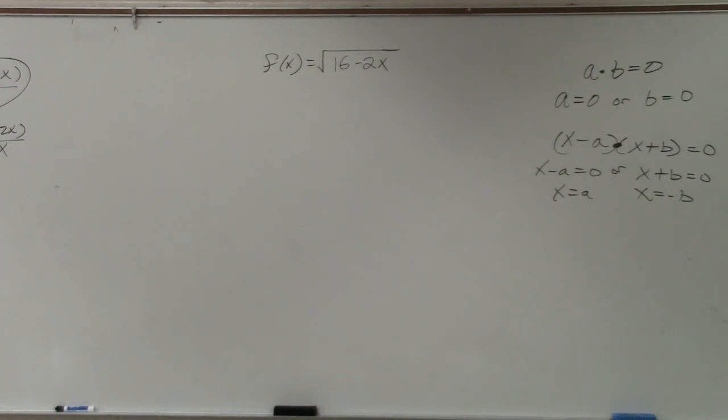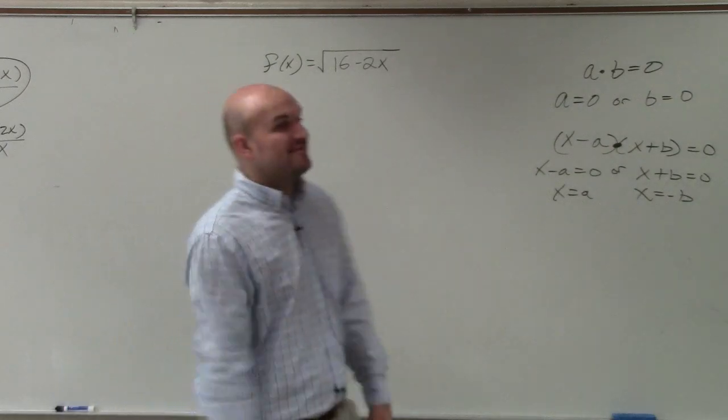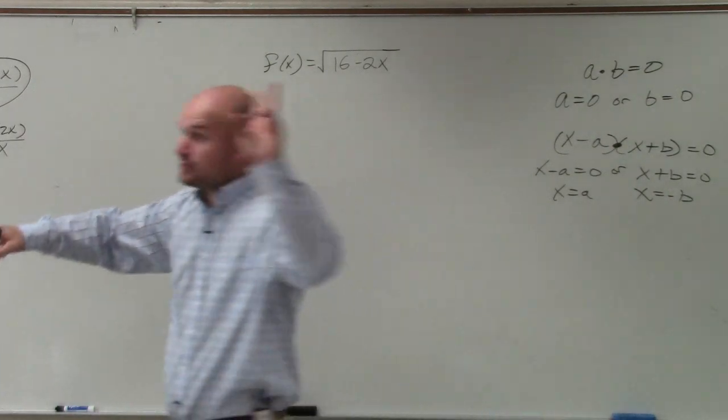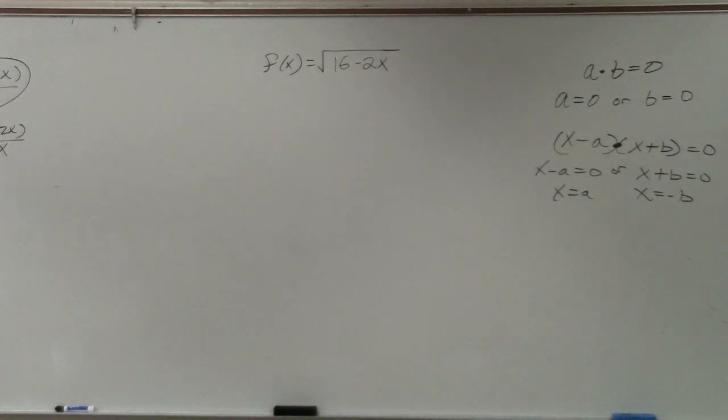Again, if we look at our implied domain, we're going to imply our domain is going to be all real numbers. However, we have some restrictions because we know this is restricted. There's two restrictions we're going to talk about in this class: when x is in the denominator and when x is under a square root.